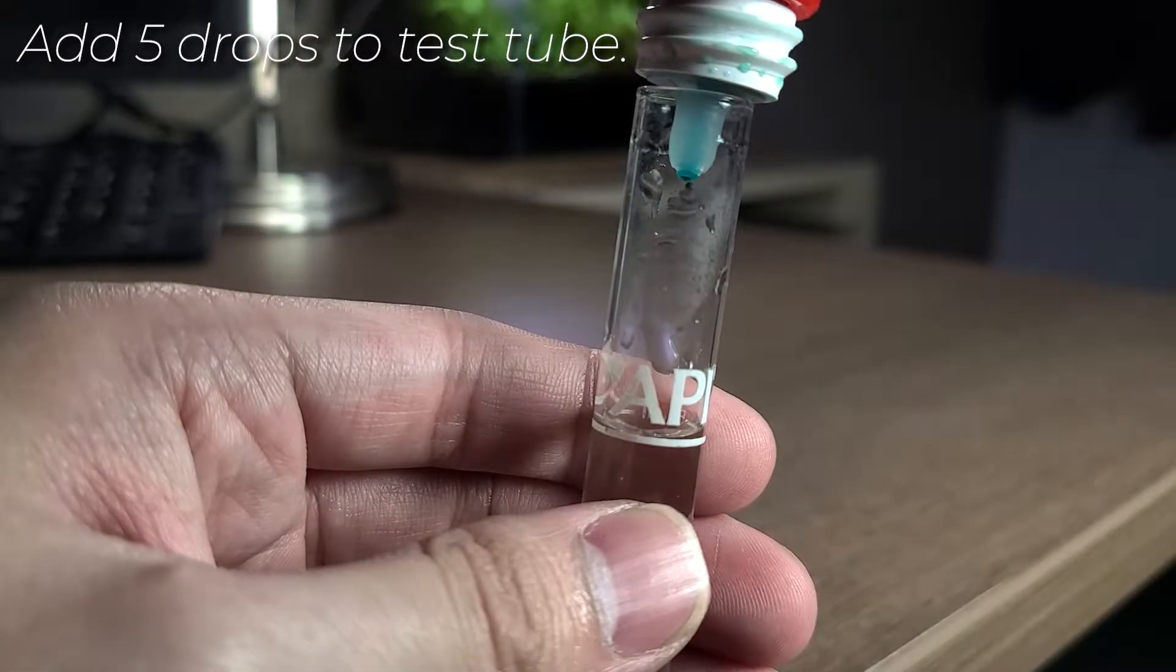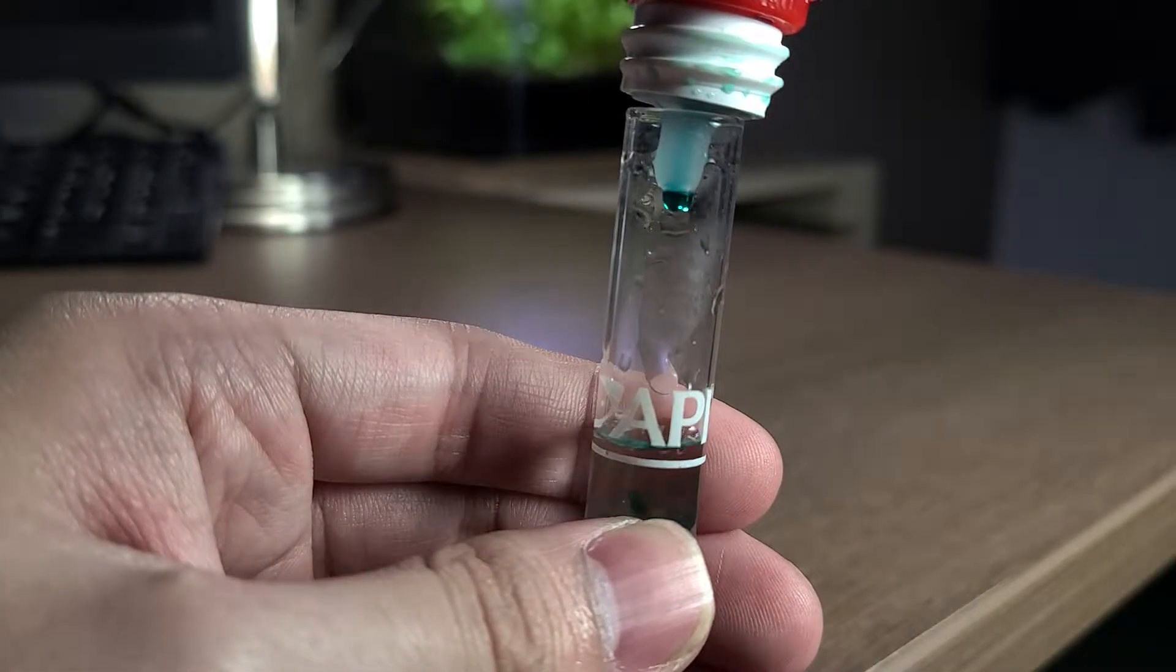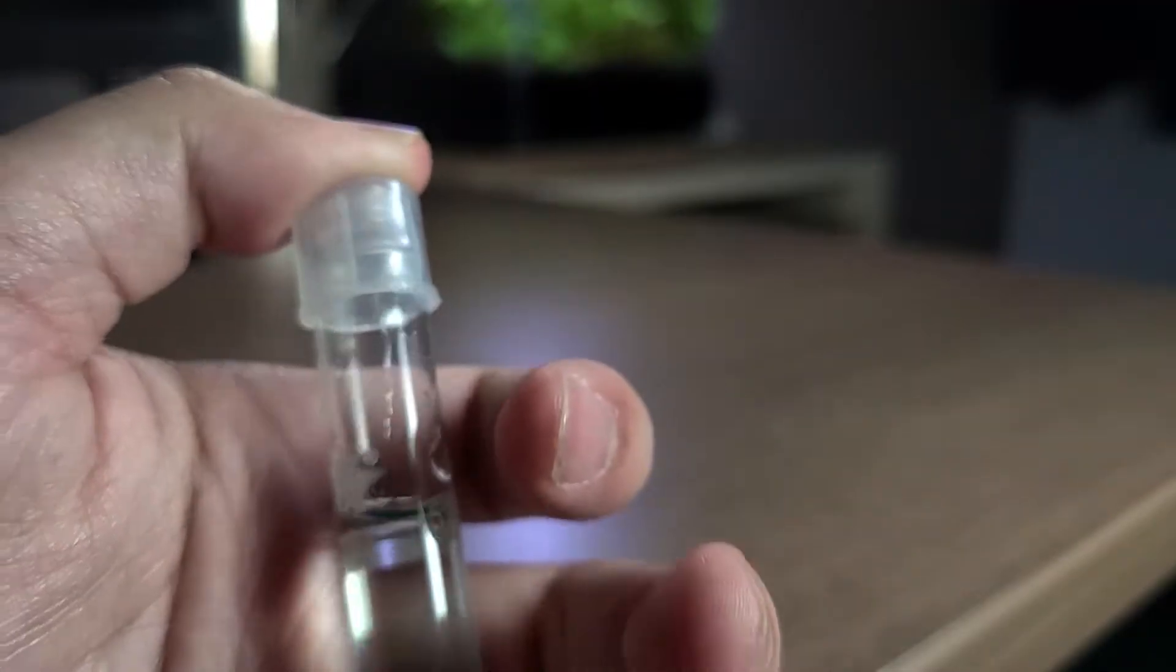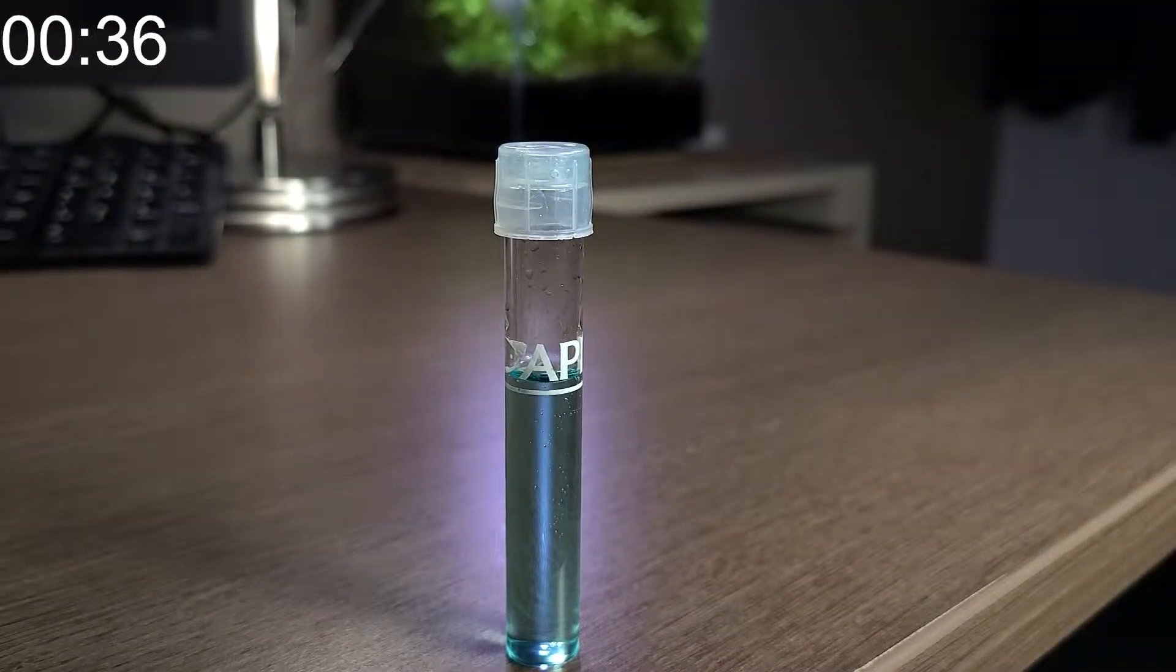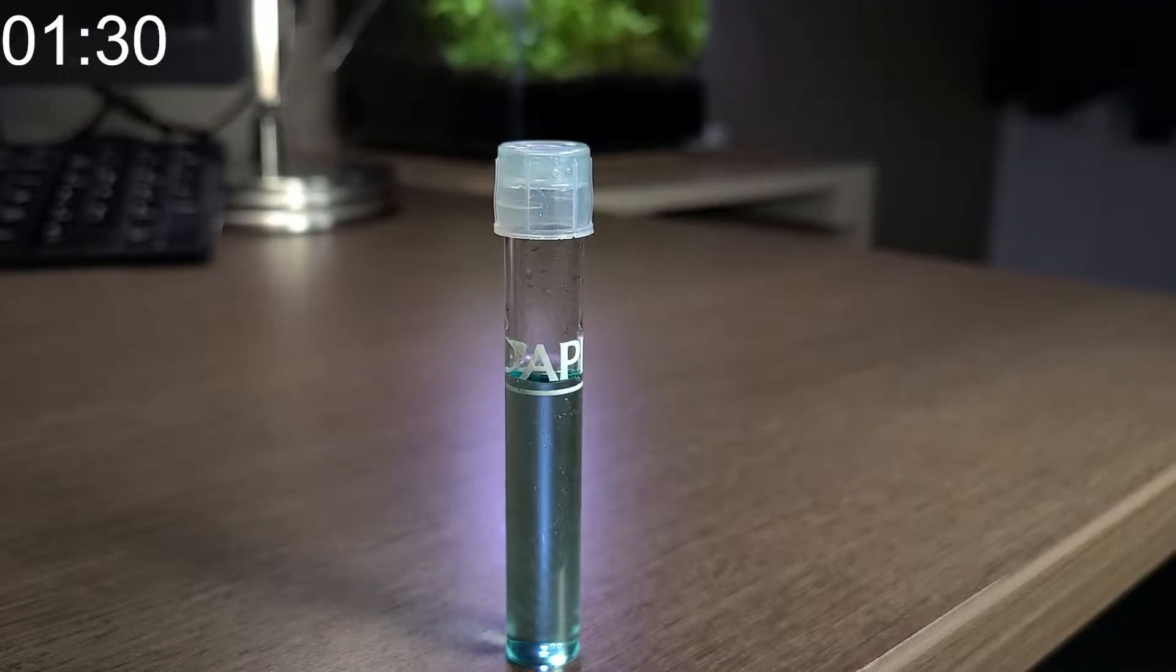For nitrite, we need to add five drops to the test tube. Give it a little shake and wait for five minutes for the color to develop, if any. Just like ammonia, we want this value to be zero at all times.